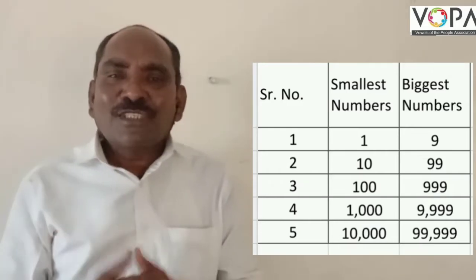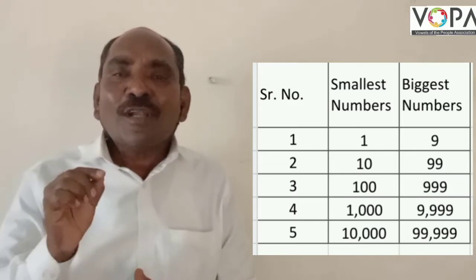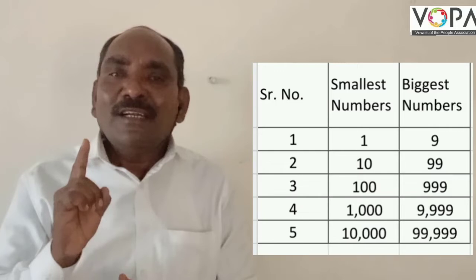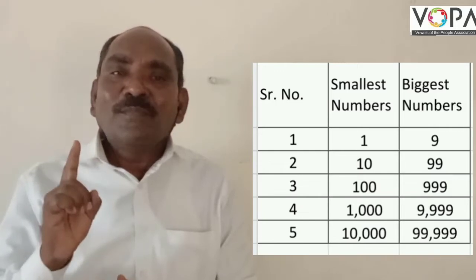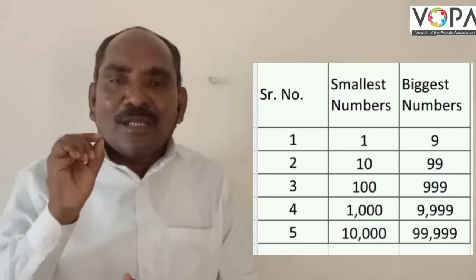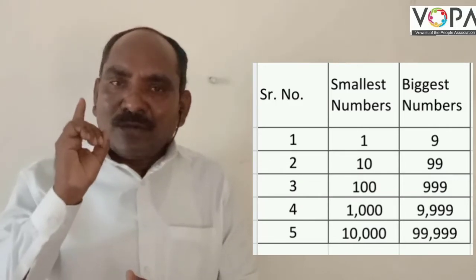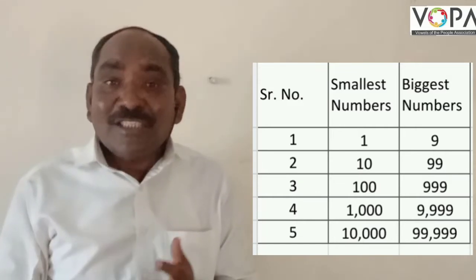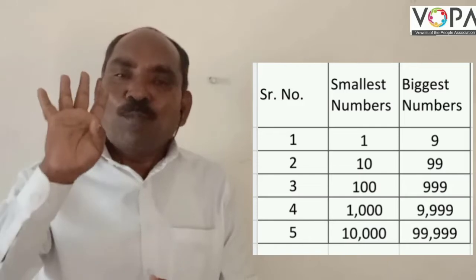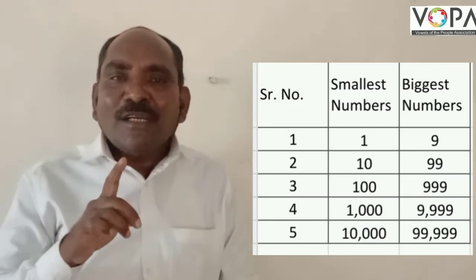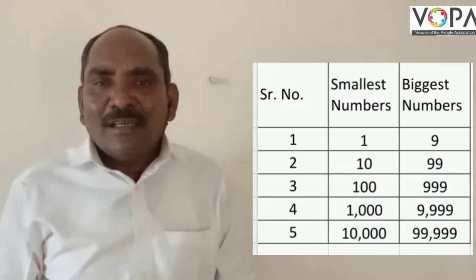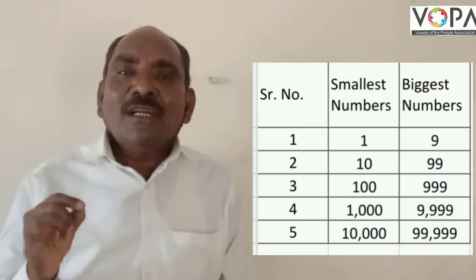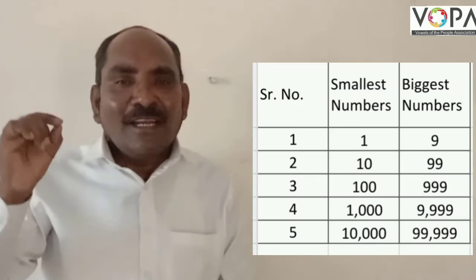Now, in this process, in this way, you add only 1 to 999 and you get 1000. This is the smallest 4-digit number. And the biggest 4-digit number is 9999.